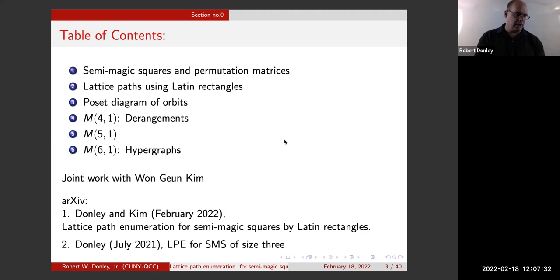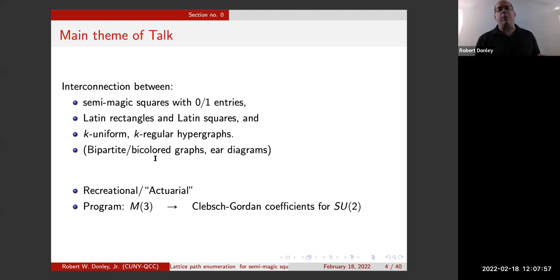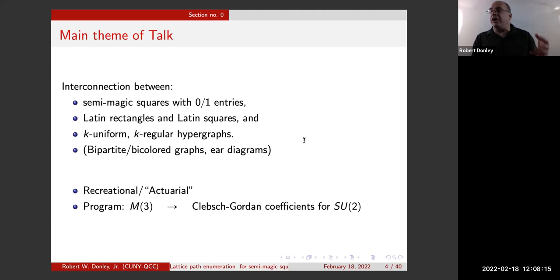Our big theme is looking at interconnections of semi-magic squares with zero-one entries — these are zero-one matrices — Latin rectangles and Latin squares, and K-uniform, K-regular hypergraphs. These topics also bring in the Birkhoff polytope, bipartite graphs, and the like. These are very heavy topics, but I'm going for more of an interconnection approach. A lot of the things I'm looking at will come right off just the definitions. The art is in putting it all together.